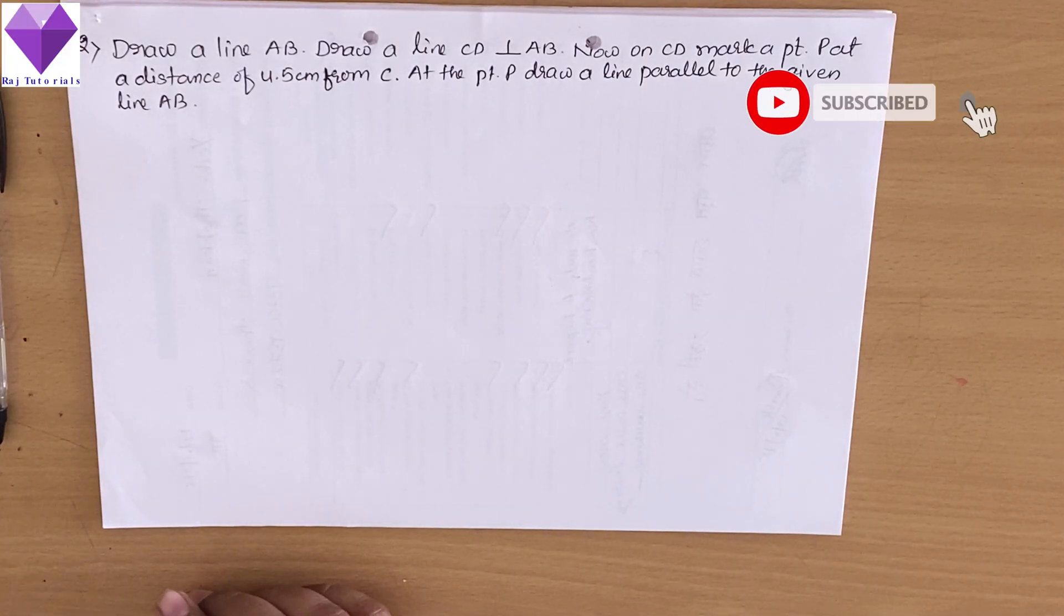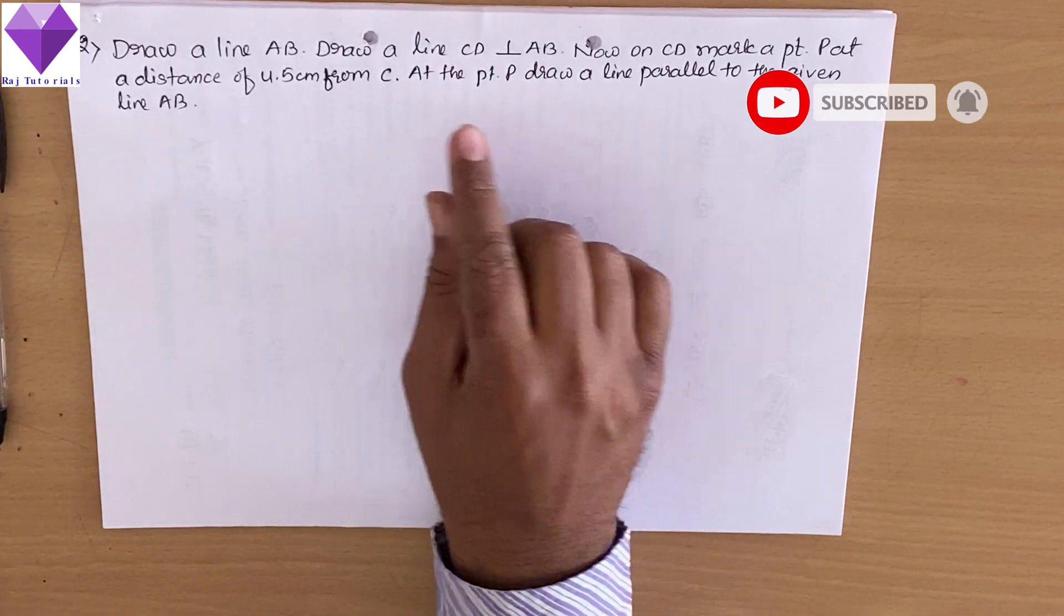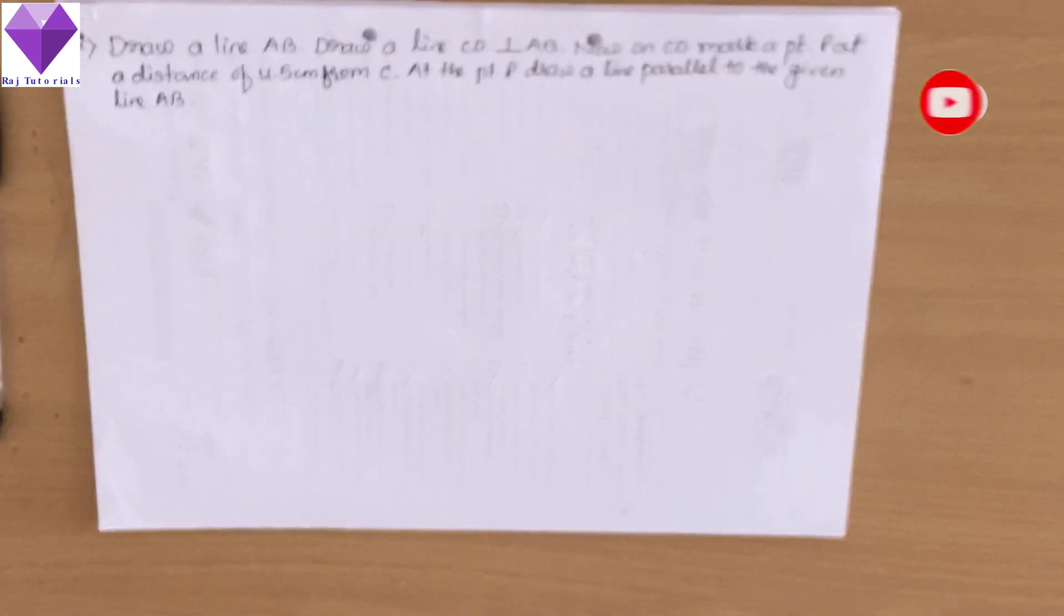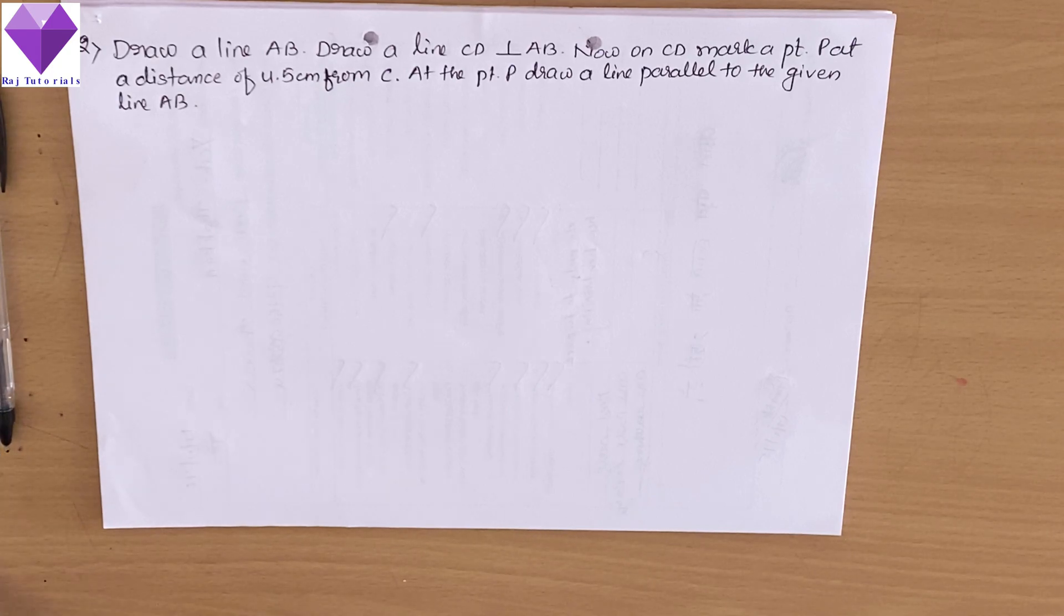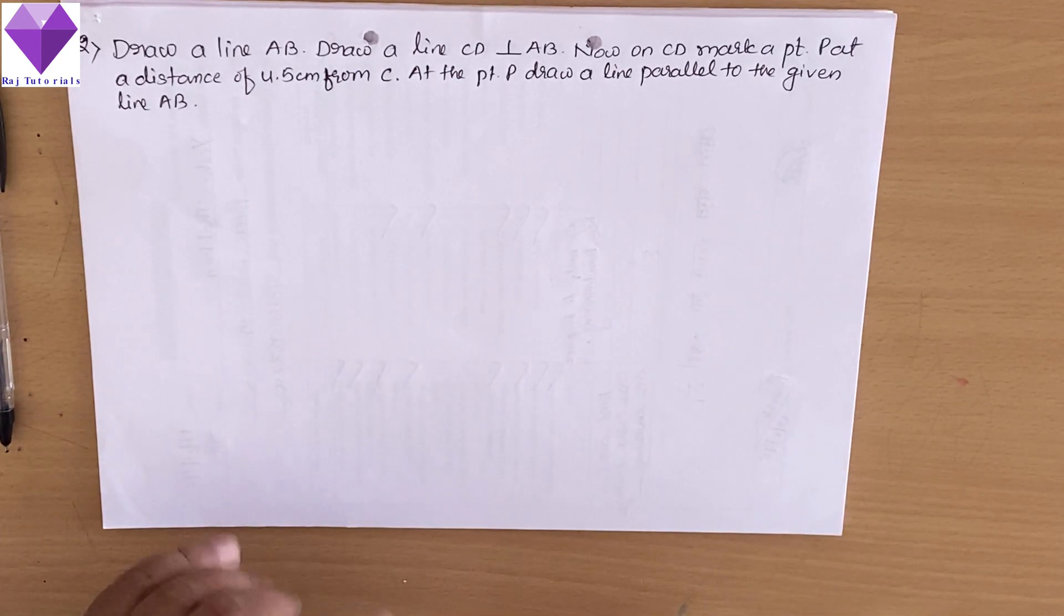Hello students, today we are going to draw a line AB. Draw a line CD which is perpendicular to AB, and on CD we have to mark a point P at a distance of 4.5 centimeters from C. At point P, we have to draw a line parallel to AB.